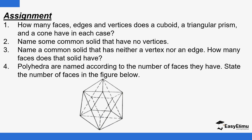We have a few questions to help you practice on what you've been learning. How many faces, edges, and vertices does a cuboid, a triangular prism, and a cone have? In each case, name some common solids that have no vertices. You should be able to use what you've learned through the lesson to answer these questions. That marks the end of the lesson — until next time, goodbye.